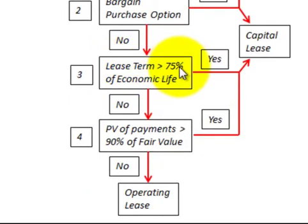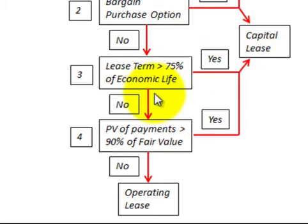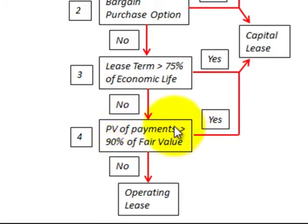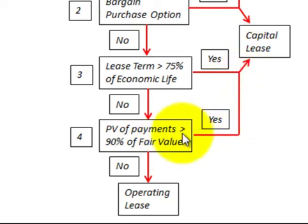The third test is the lease term: is it greater than or equal to 75% of the economic life of the asset? If yes, it's a capital lease. If no, we proceed to the fourth test — the present value of the payments. Are they greater than or equal to 90% of the fair value of the asset? If yes, it's a capital lease. If no, it becomes an operating lease.